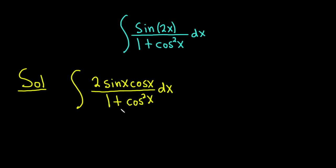However, if we let u be the entire bottom piece as follows, I think it's going to work out nicer. Watch this. Let u be equal to 1 plus cosine squared x.